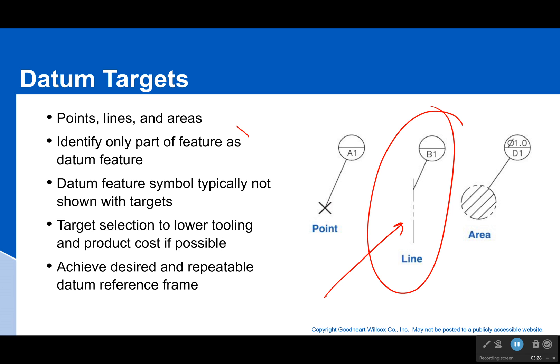Remember, this is only identifying a part of the feature as a datum feature — it's not the entire surface. It's a particular point where you put those X's, lines, or areas.